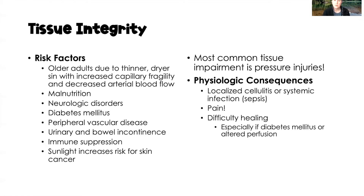Exposure to UV rays is another big risk factor for tissue integrity impairment. Our most common tissue impairments are pressure injuries. Those can happen at home, requiring the client to be admitted to a hospital or acute care facility to manage them. But we also have hospital-acquired pressure injuries, which we as nurses are trying to prevent when a client is in our care.